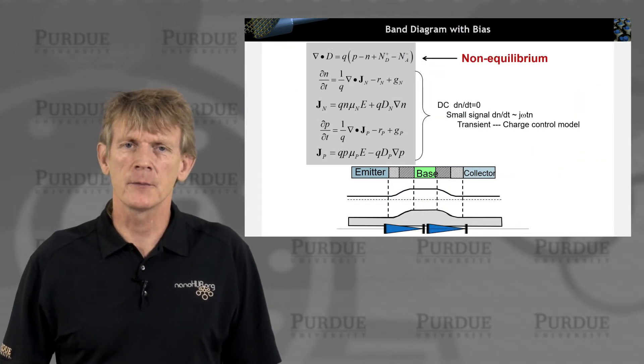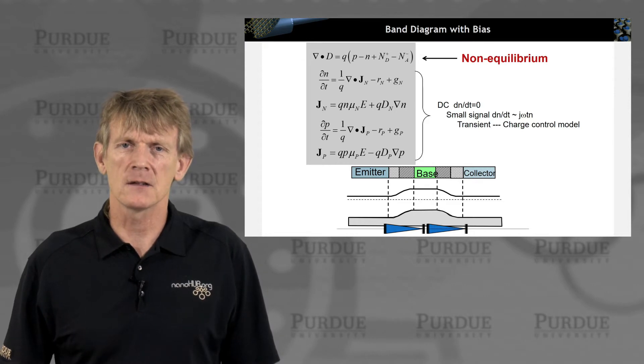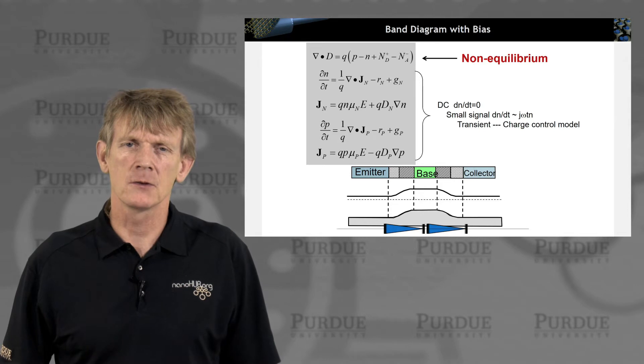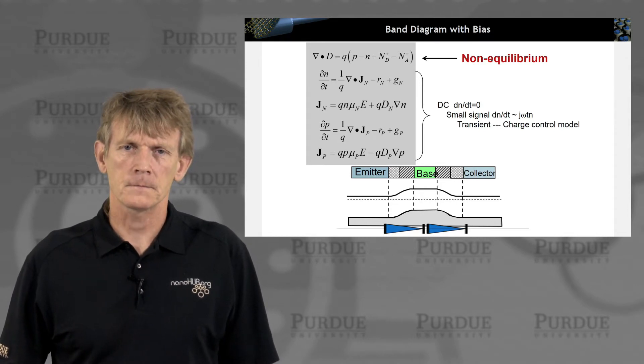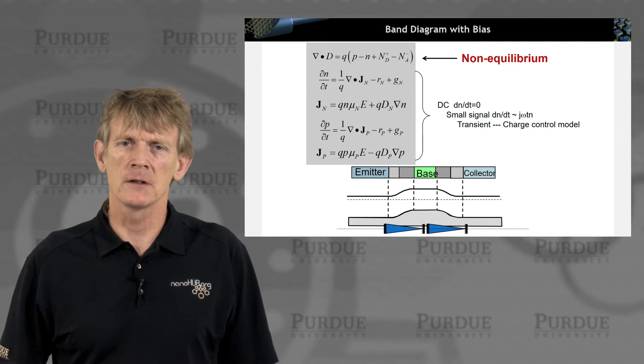We start again from the semiconductor equations. We had just used for equilibrium the Poisson expression to draw a band edge diagram that we have at the bottom now.